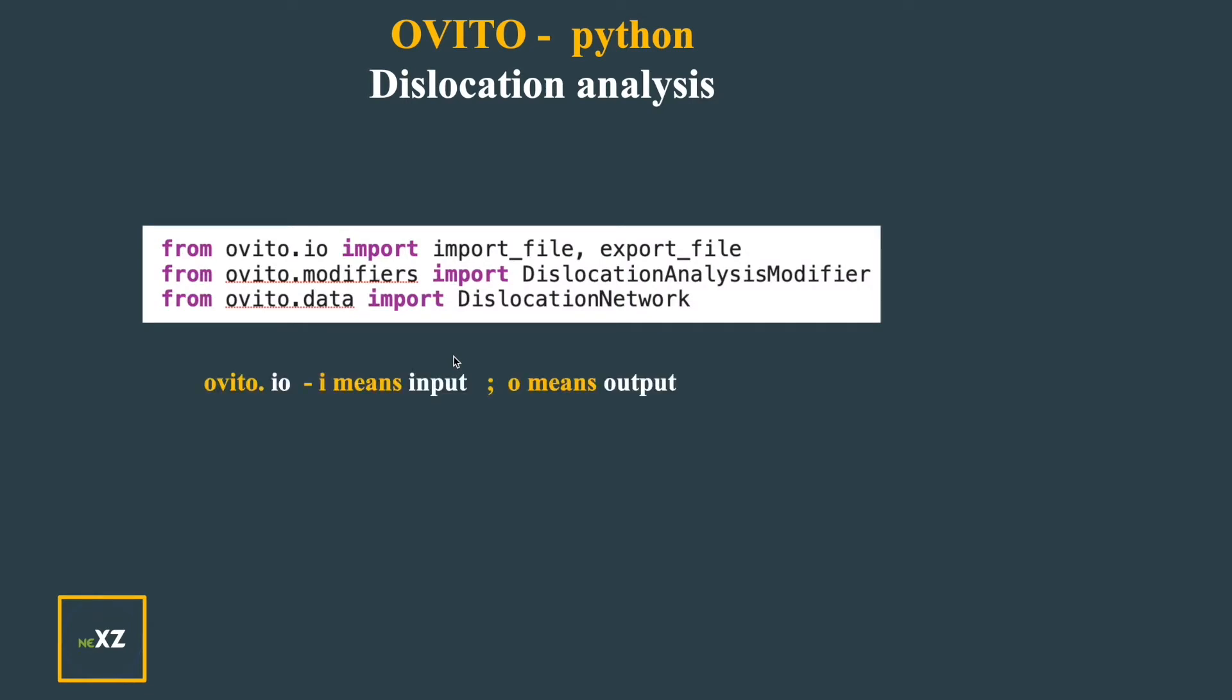One is ovito.io. i means input, o means output. And from there I am importing import_file and export_file. Import_file I can import the file which I want to do analysis and export_file to export some information which I get from dislocation analysis.